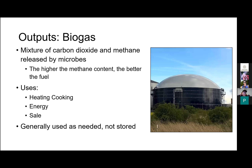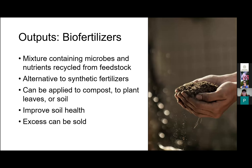There are two main outputs for biodigesters. Biogas is a mix of carbon dioxide and methane released by microbes — the higher the methane content, the better the fuel — which can be used for heating, cooking, energy, or sale. Bio fertilizers are a mixture containing microbes and nutrients recycled from the feedstock, and can serve as an alternative to synthetic fertilizers. Bio fertilizers can be applied to compost, folially to plant leaves, or to soil, improving soil health by restoring nutrients and invigorating the microbial environment. Excess bio fertilizers can also be sold.